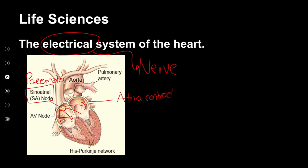Then the next message goes to the next bundle over here called your atrioventricular node — between the atrium and the ventricles. It's like a domino thing: one touches and the whole thing goes. The ventricles must now contract, so the nerves go all the way around the ventricles and tell the muscle what to do, and the ventricles contract.